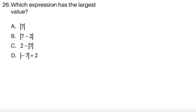For item 26, which expression has the largest value? We have 4 absolute values given. So let's deal with the first one. The absolute value of 7, that's simply 7. The absolute value of 7 minus 2, that's equal to saying the absolute value of 7 minus 2, that's 5. So the absolute value of 5, that's just 5.